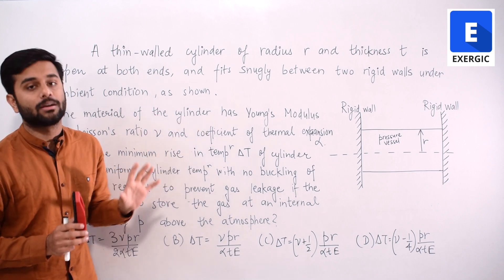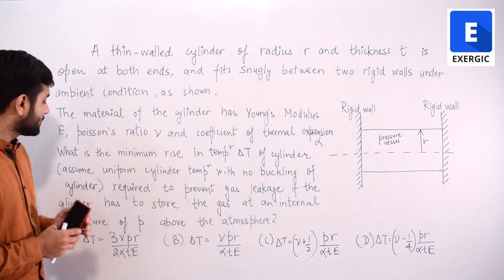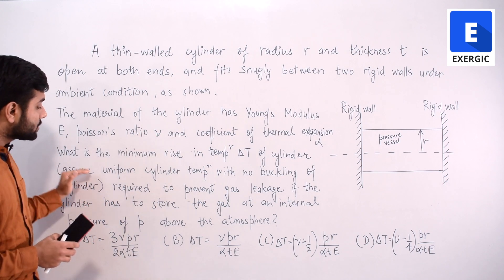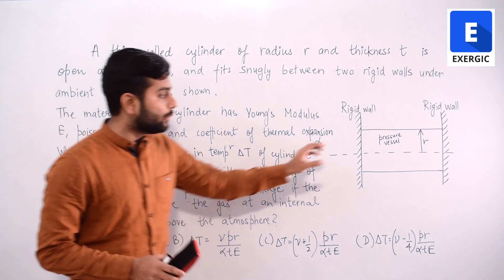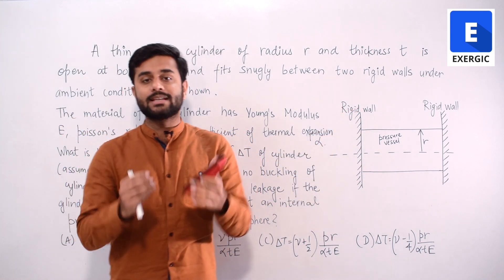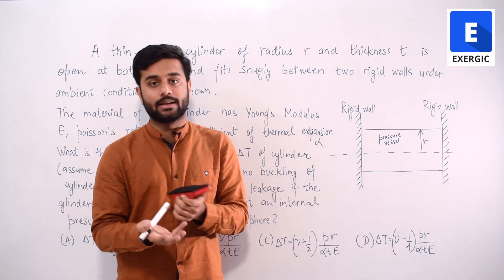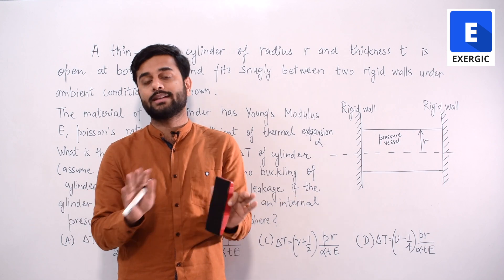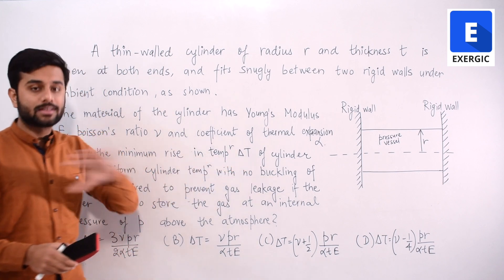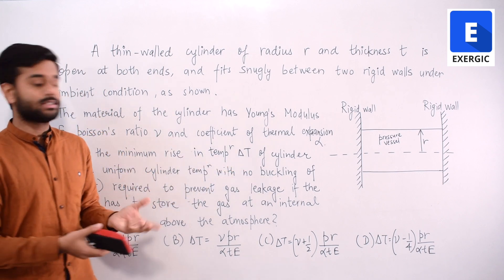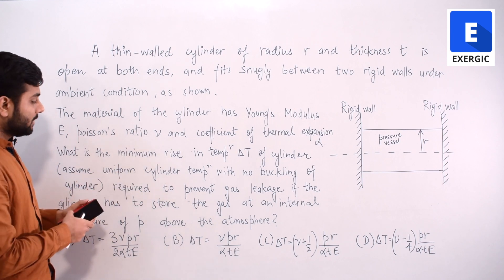It is asking you what is minimum rise in temperature delta T of cylinder. So we are planning to heat this up, trying to increase its temperature. This is clear from this line. In bracket it says assuming uniform cylinder temperature with no buckling means when you're going to heat it, there will be changes in dimension and that change may try to buckle it, but we don't have to consider any buckling at all and the temperature generation is uniform throughout. It has simplified things for us.